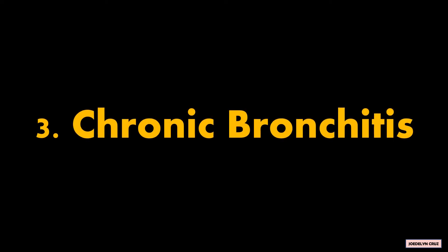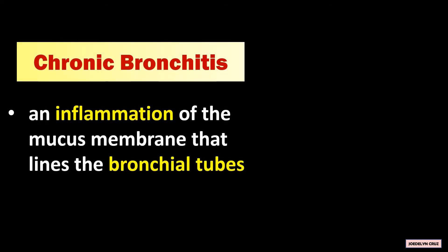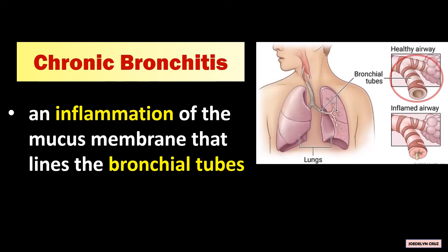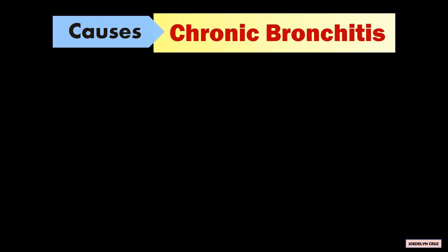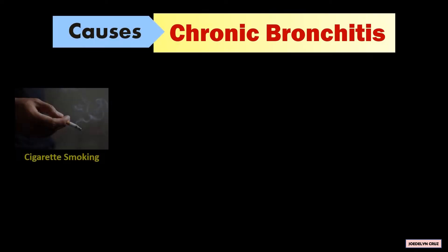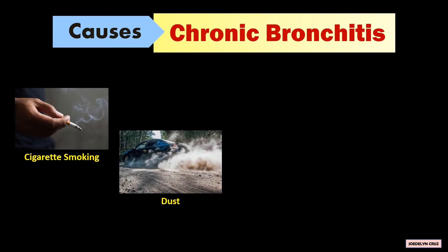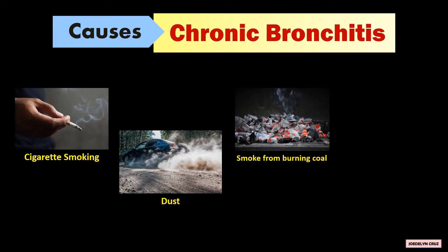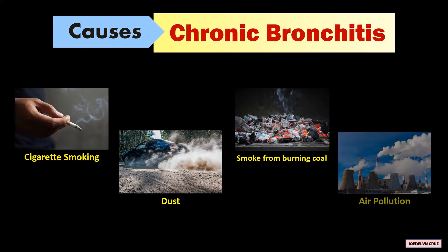Chronic bronchitis is an inflammation of the mucous membrane that lines the bronchial tubes. In this picture, this is the healthy airway, while this is the inflamed airway. The causes of chronic bronchitis are cigarette smoking, dust, smoke from burning coal, and air pollution.